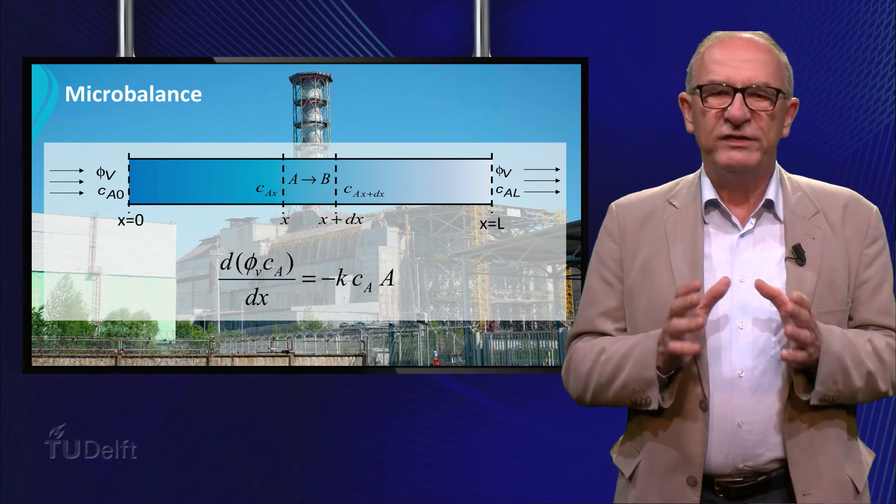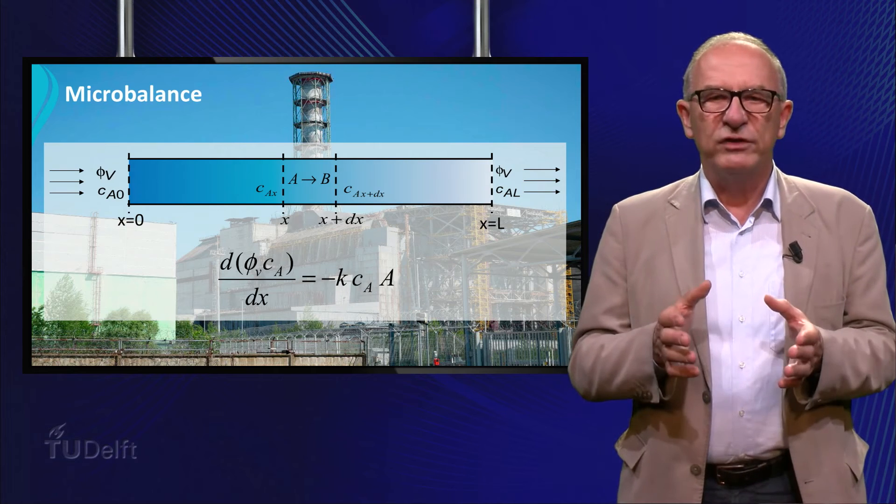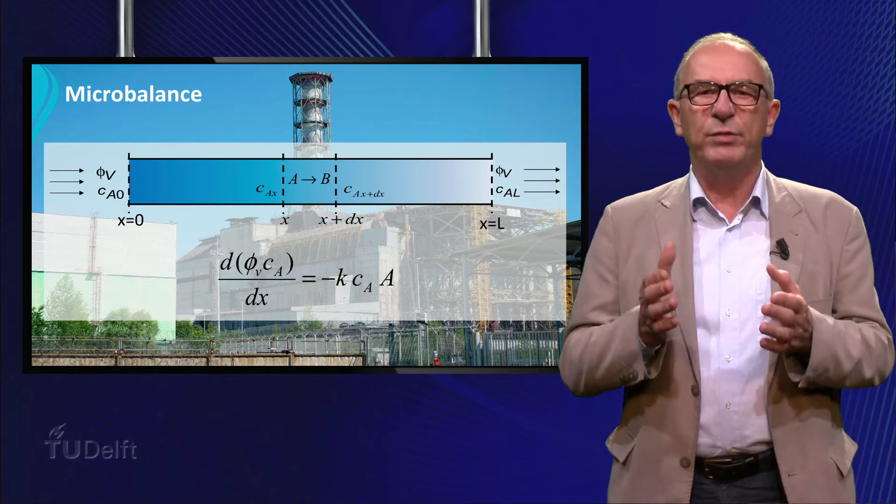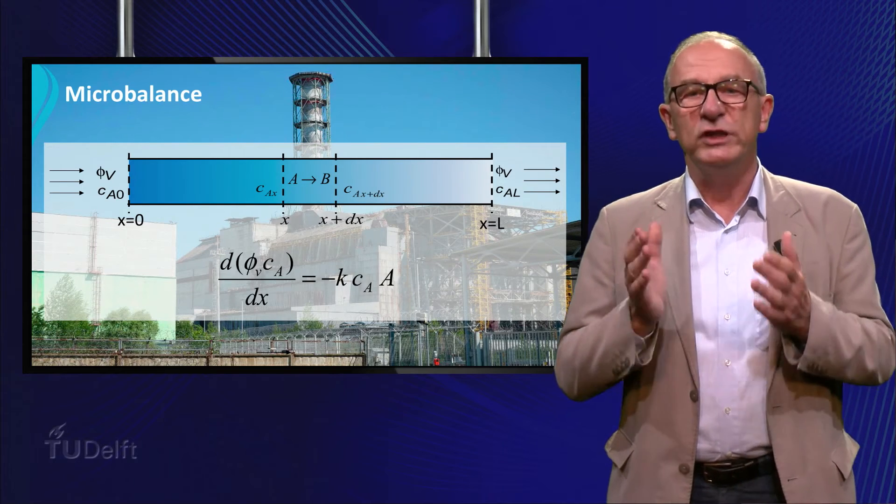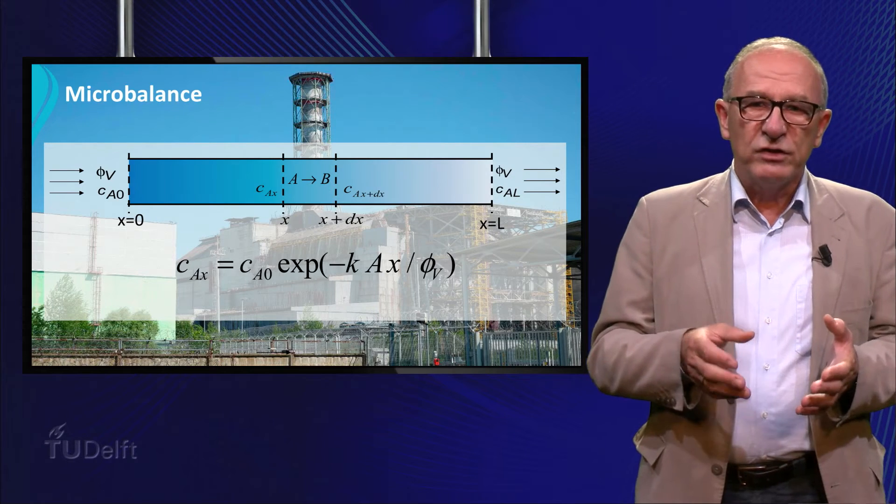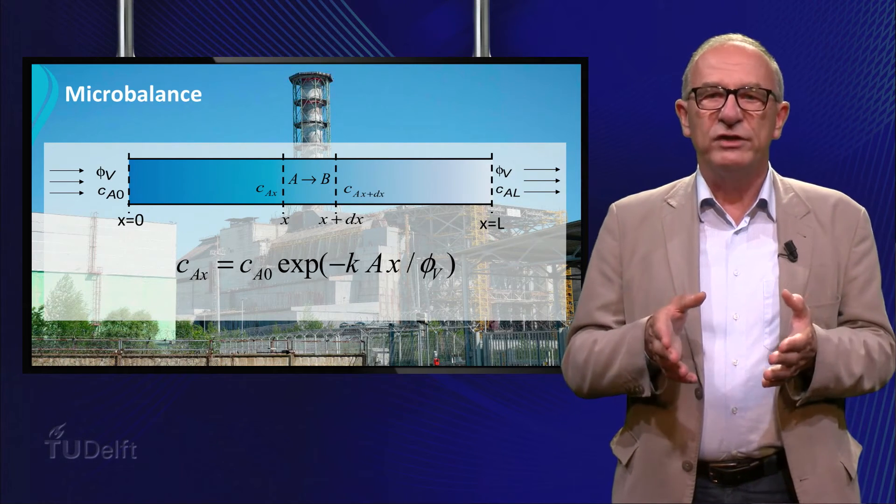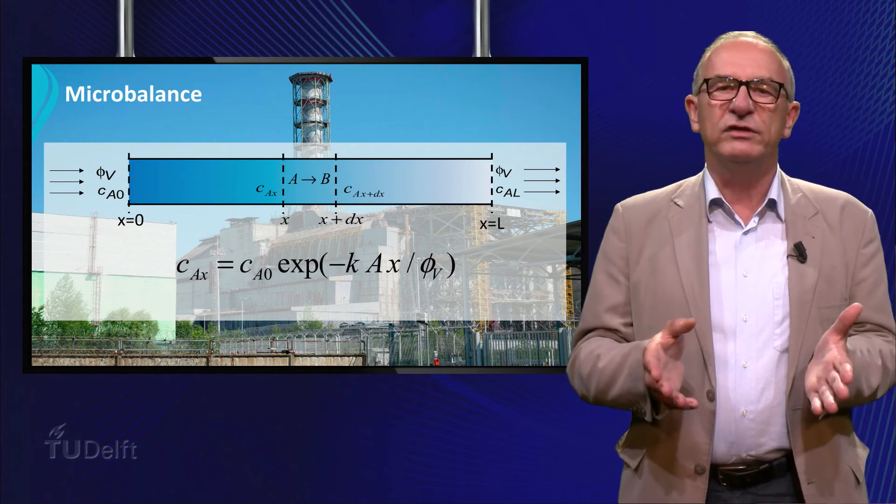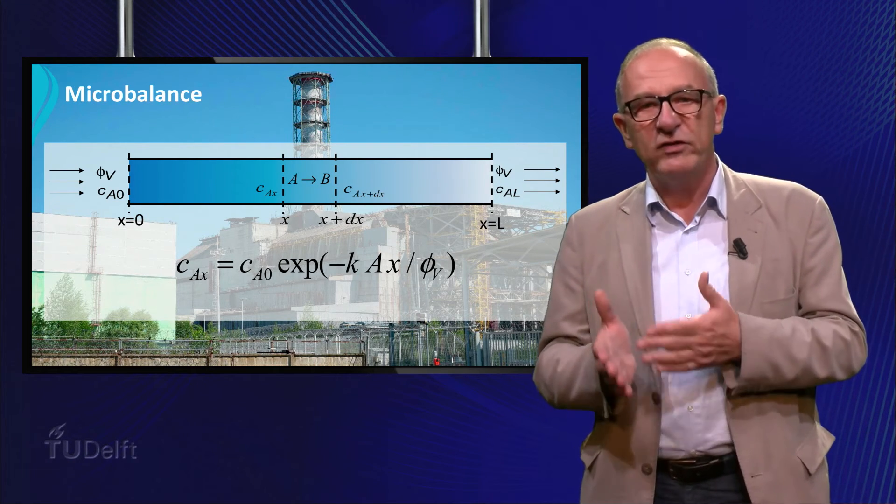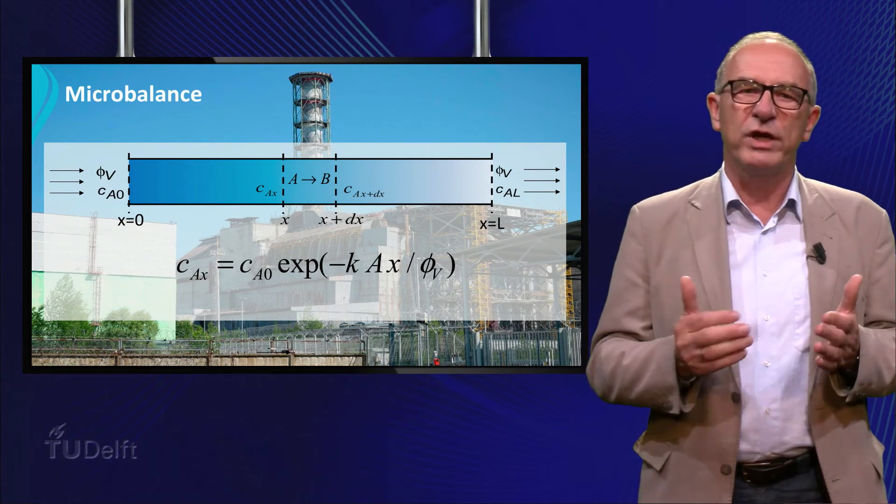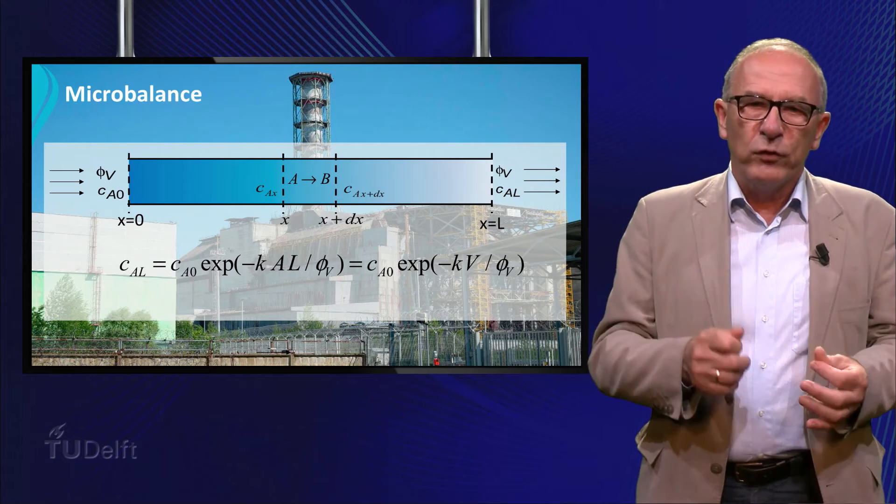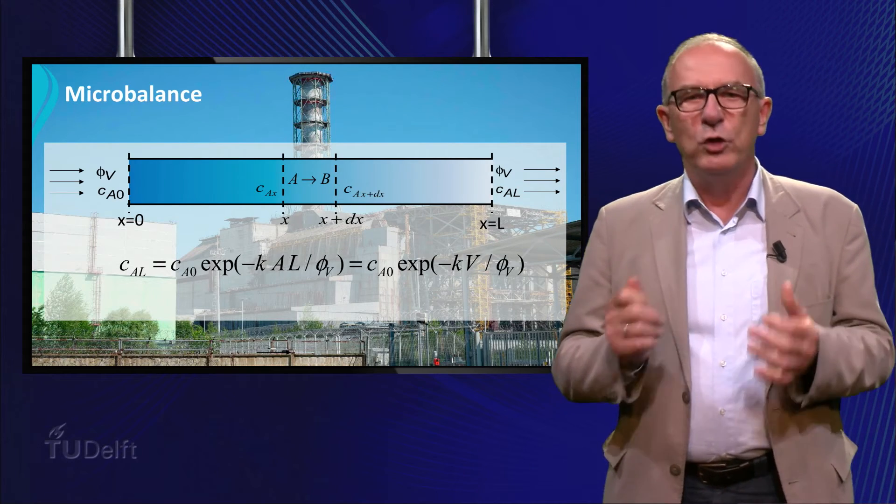The solution of this equation can be obtained by integration and using the boundary conditions that the concentration A at the beginning of the tube is equal to CA zero. This equation shows that the concentration exponentially decreases as a function of the distance from the beginning of the tube and ends at x is L with the concentration. In this equation V is the volume of the whole tubular reactor.